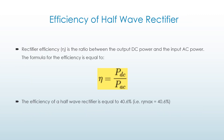Efficiency of half wave rectifier. Rectifier efficiency, eta, is the ratio between the output DC power and the input AC power. The formula for efficiency is: eta is equal to PDC by PAC.